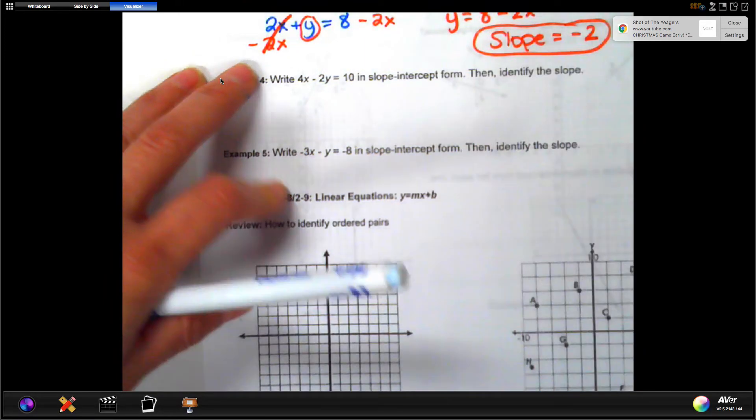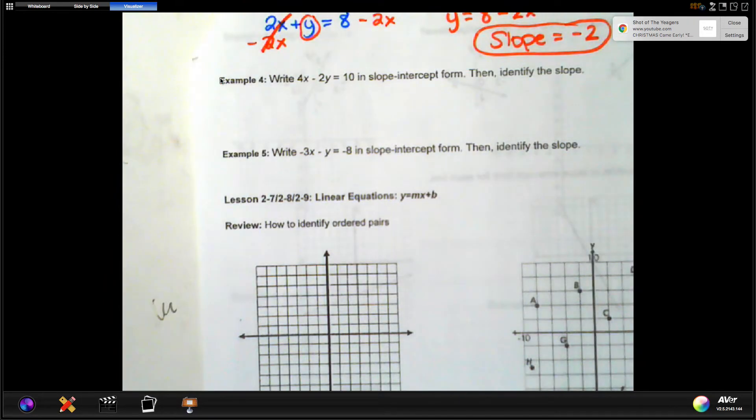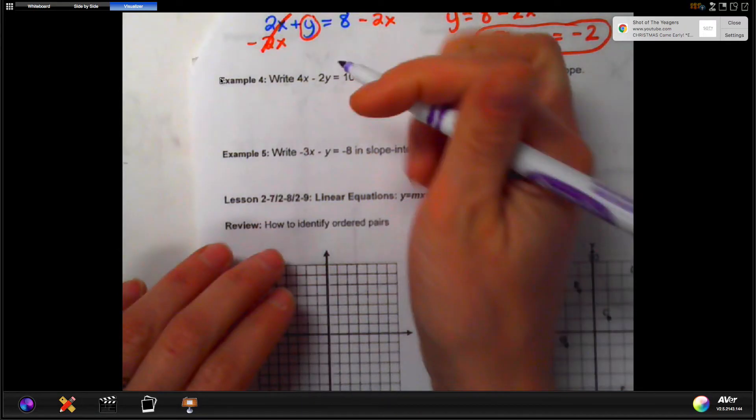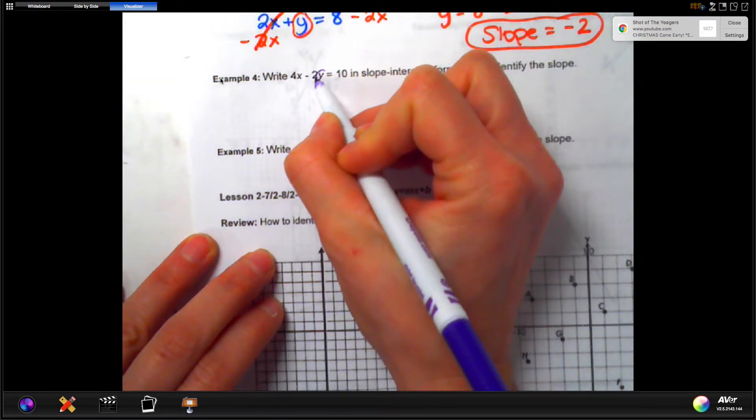Let's try again. And as we go, this gets more challenging. So example 4, if you don't have the packet, go ahead and write it down on a sheet of paper. 4x minus 2y equal 10. We're going to write that in slope-intercept form, then identify the slope. In this case, we want y to be all by itself.